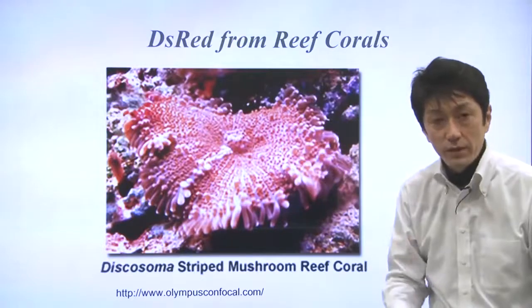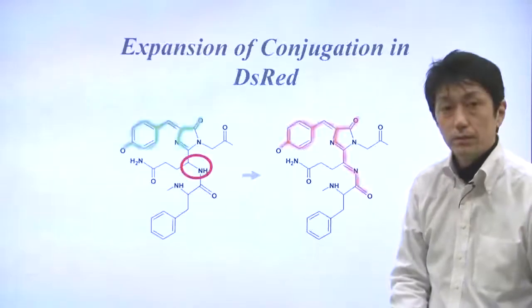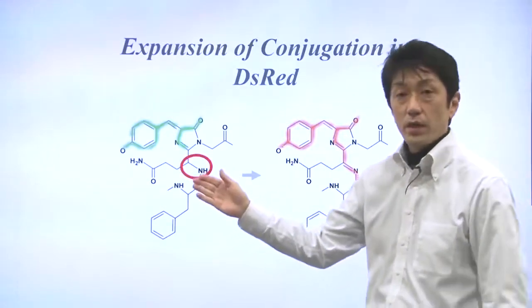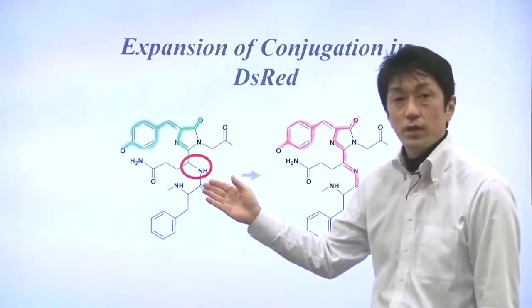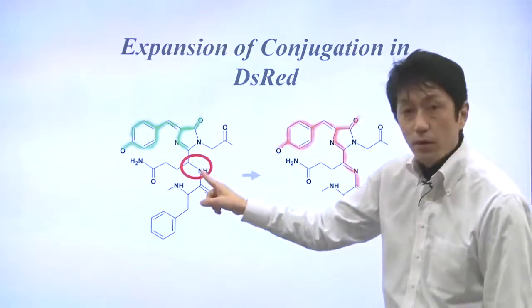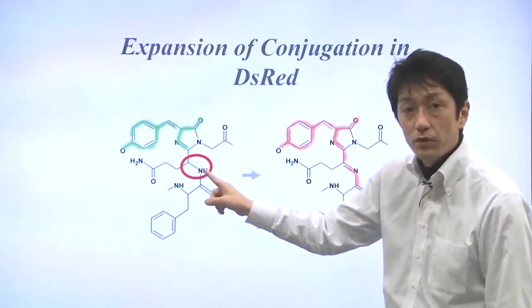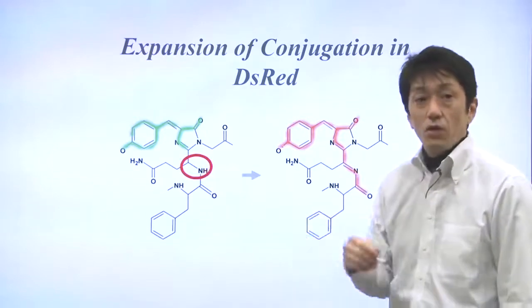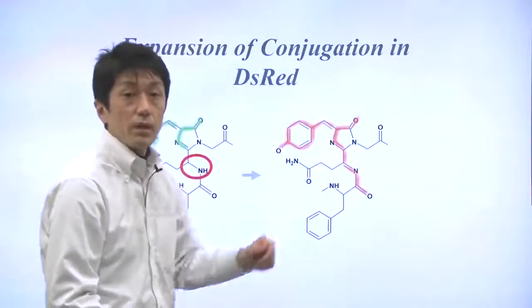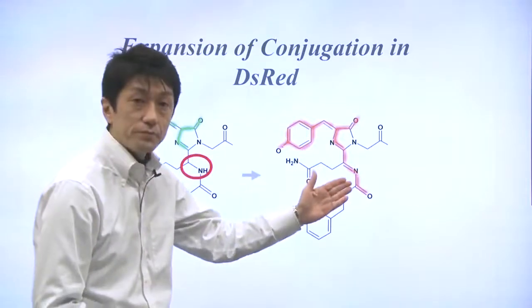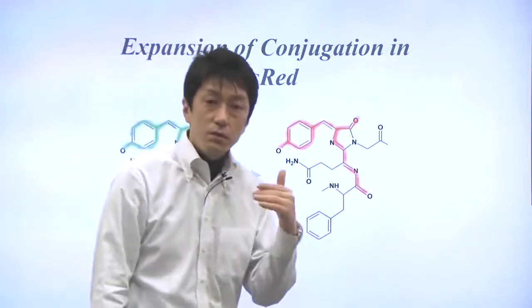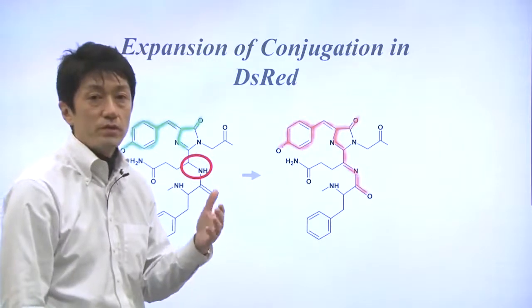Why is it red? This is the chromophore of GFP, as I already mentioned. What happened in DS-RED is that this part of the molecule has been oxidized. Oxidation generates a double bond here, expanding the conjugation. As I mentioned, the longer the conjugation is, the longer the excitation and emission wavelengths are.